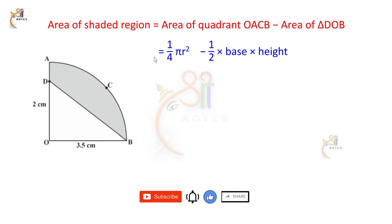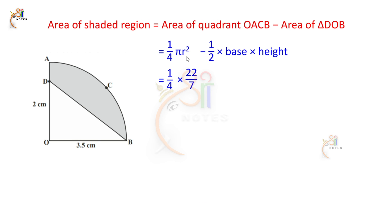Substituting values: area equals 1 by 4 into 22 by 7 into 3.5 squared, minus 1 by 2 into base 3.5 into height 2. Converting 3.5 to 7 by 2, so 3.5 squared equals 7 by 2 squared equals 49 by 4.